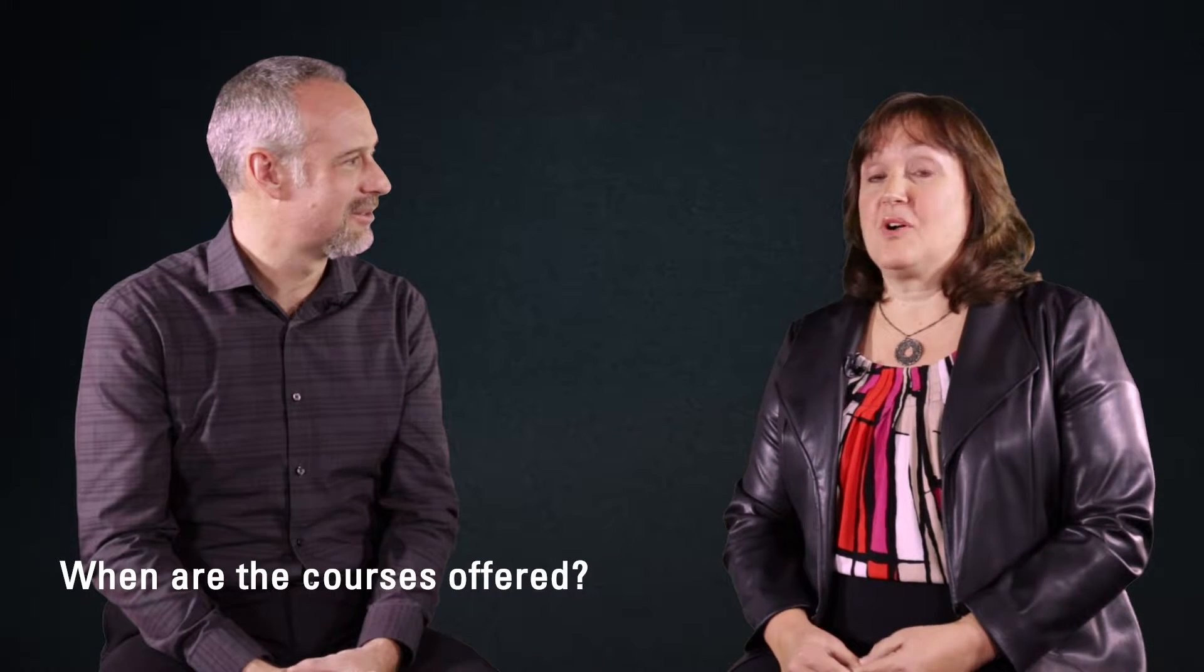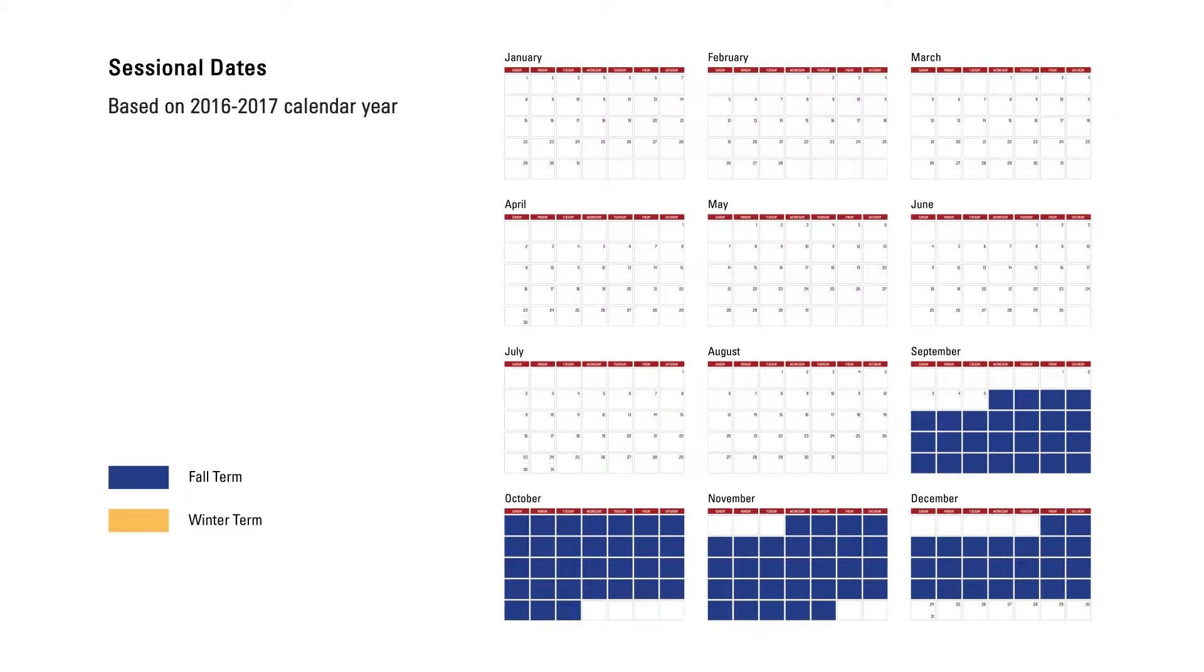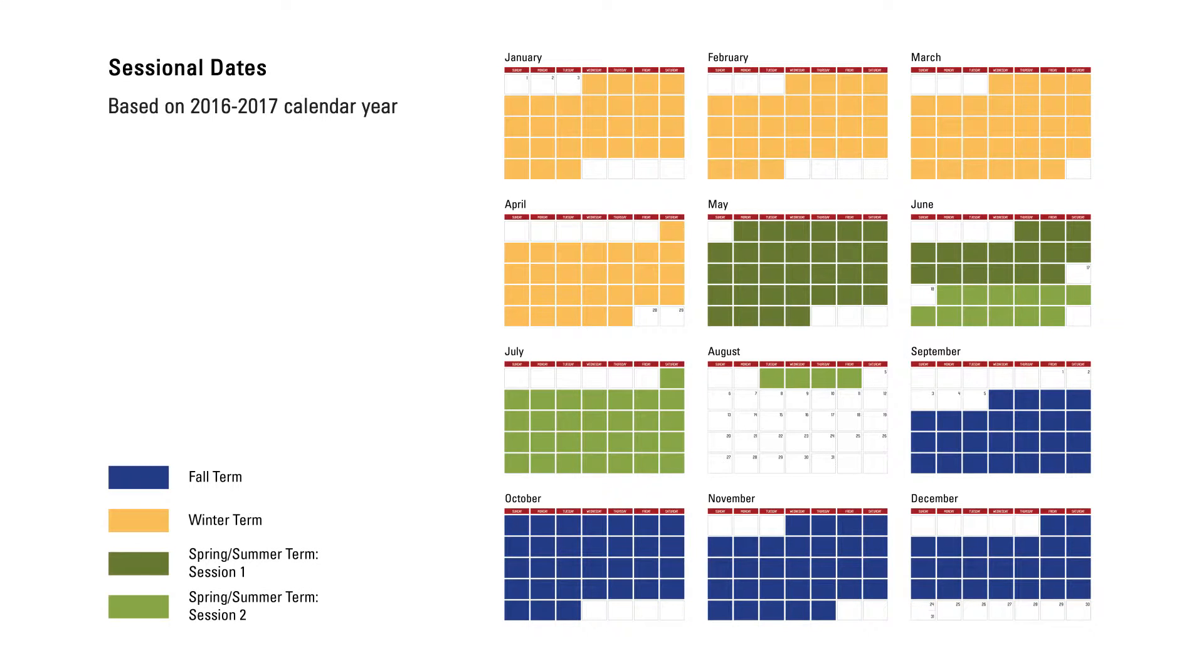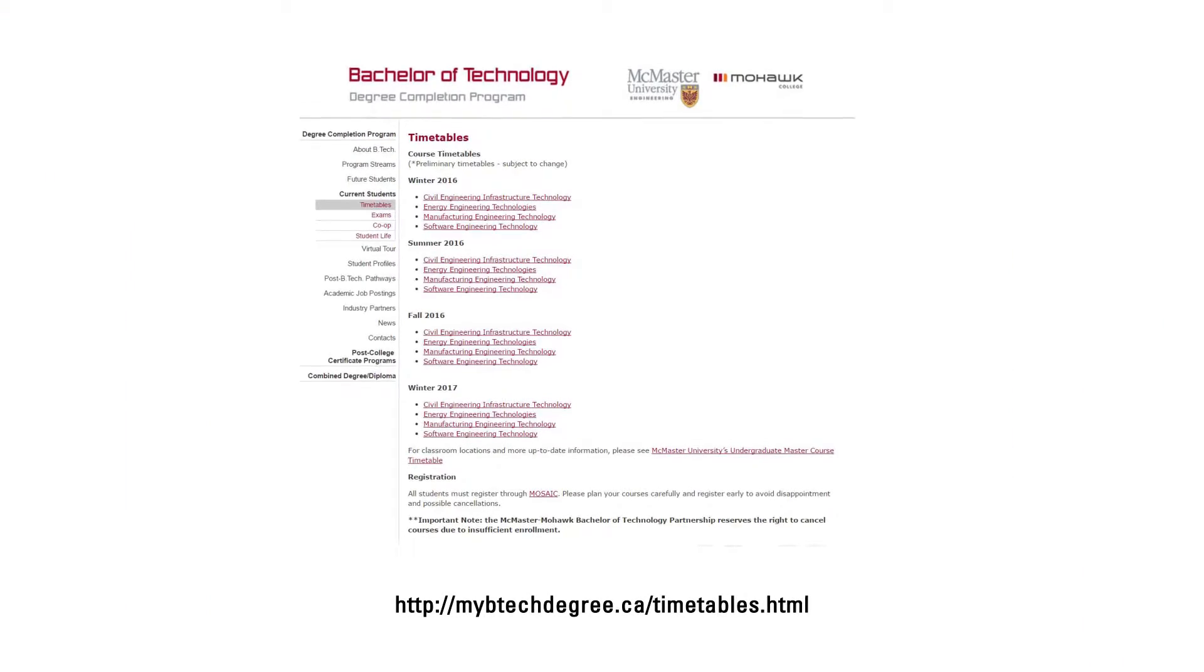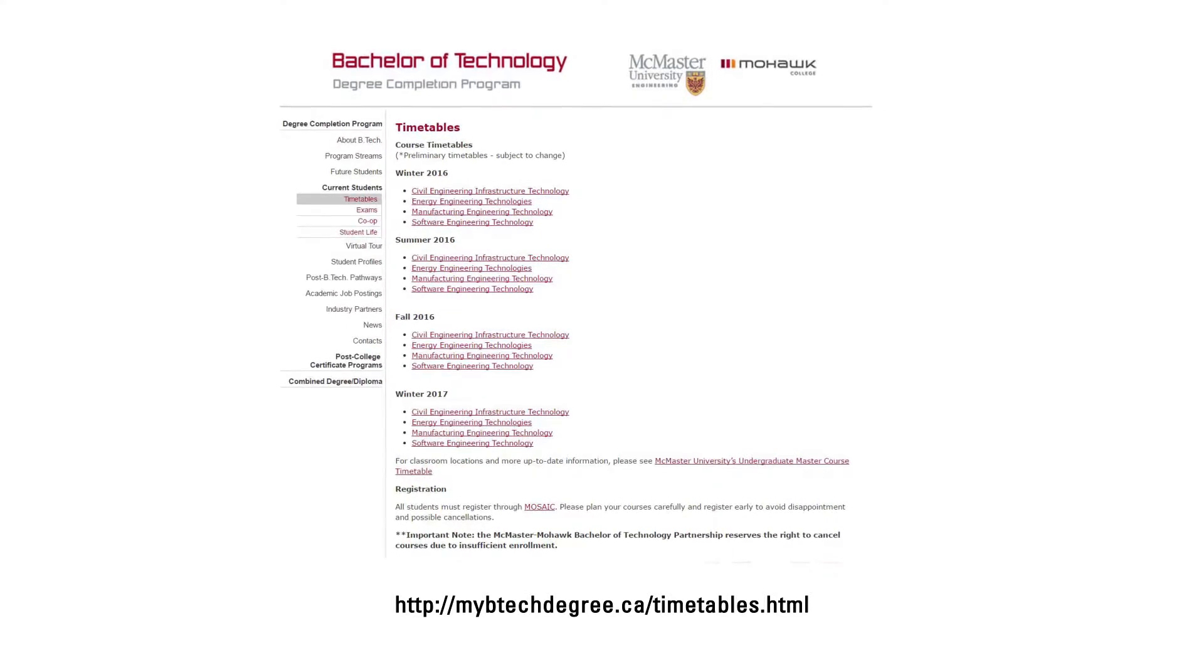The courses are offered in three different terms: a fall term which runs from September to December, a winter term which runs from January through to April, and the summer term which runs from May through to August. Students can actually enroll in up to six courses in each of those terms. We have on the BTEC website, based on your program stream, a convenience timetable that we put out there, so you can actually look by term and plan at least one term in advance. You can look at those timetables to find out which days the courses are offered on and which courses are offered.